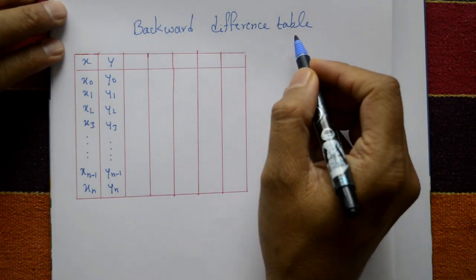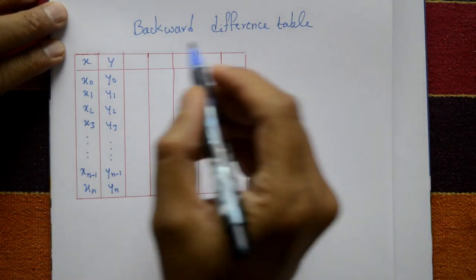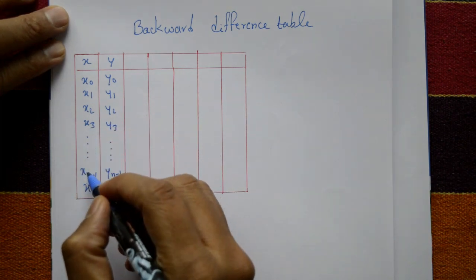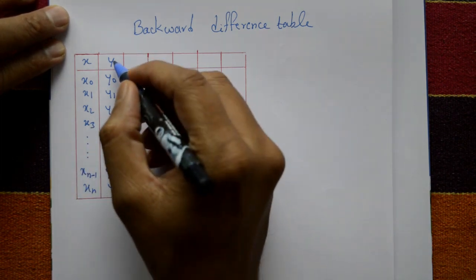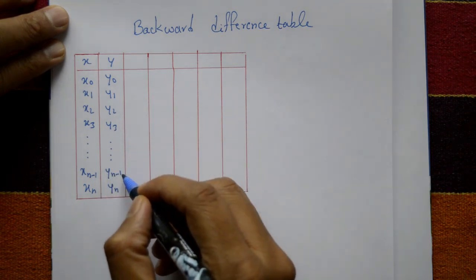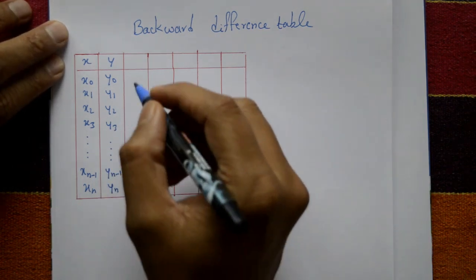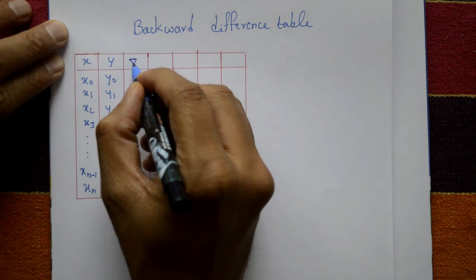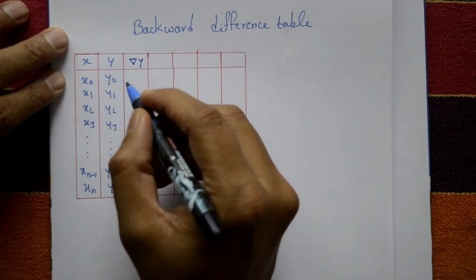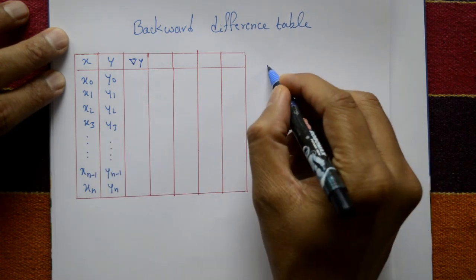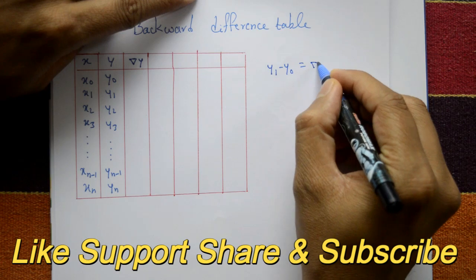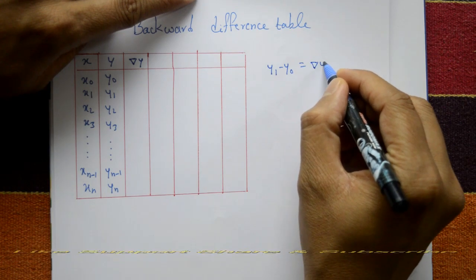The backward difference table has x values x0, x1, x2, x3, x4, up to xn-1, xn, and y values y0, y1, y2, y3, y4, y5, up to yn-1, yn. Now, nabla y means the first backward difference: y1 minus y0 is equal to the first backward difference y1.